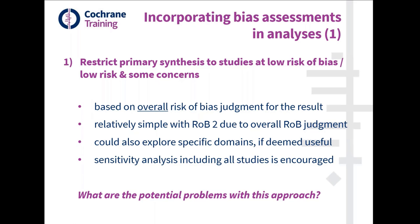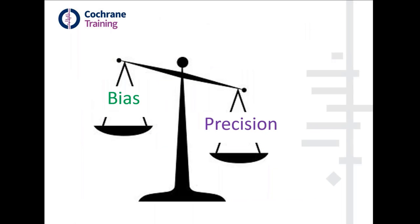What are the potential problems with this approach? There is a trade-off between precision and bias. Restricting to stronger studies may reduce bias but may increase imprecision because of the smaller amount of information available. Including all available studies decreases imprecision but produces a result with higher risk of bias. That trade-off might come out in the wash once you insert the result into GRADE, because GRADE assesses both bias and precision — so if restricted to low risk of bias studies, you'll have no concerns for bias in GRADE but might be downgraded for imprecision, or vice versa.